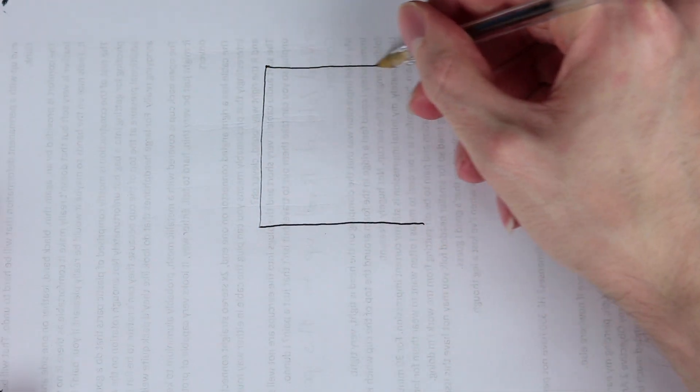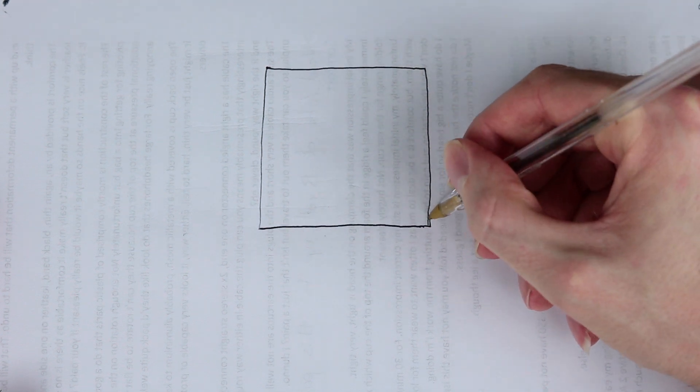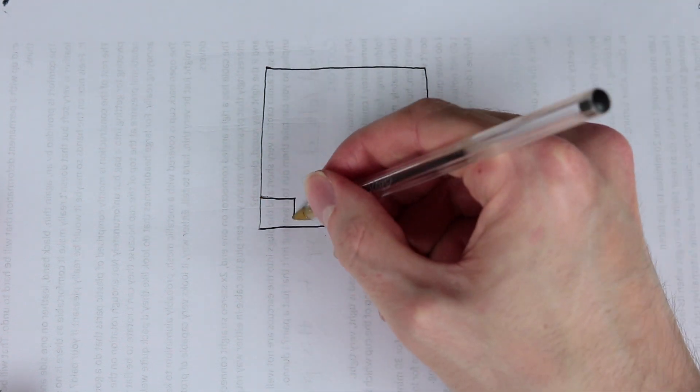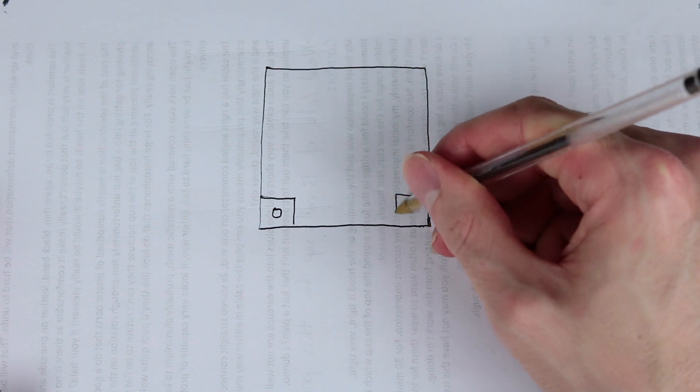So let's have a closer look at how the CoreXY kinematics work. First let's draw the frame. In the corner of our squares we'll draw two stepper motors, each with a little gear on them.